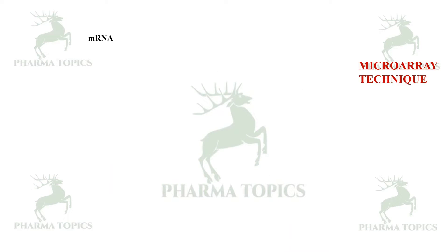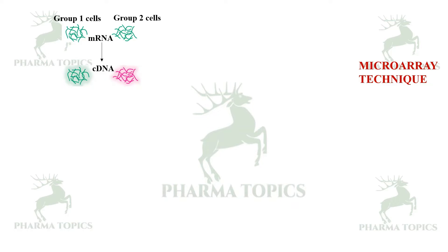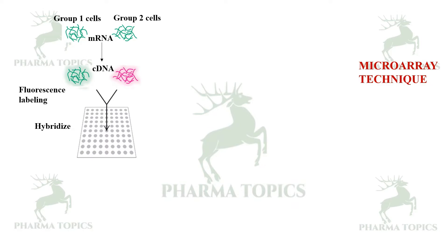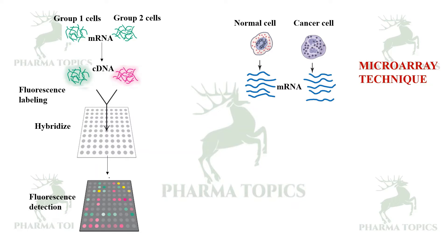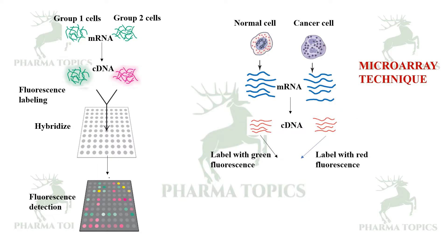The mRNA from two groups of cells is converted to complementary DNA with the help of reverse transcriptase, fluorescently labeled, and hybridized on the microarray. For example, comparing a normal cell and a cancerous cell: cDNA from the normal cell RNA is labeled with green fluorescence, and cDNA from the cancerous cell is labeled with red fluorescence. Both are then hybridized on the microarray plate.